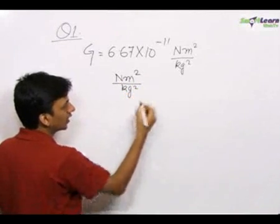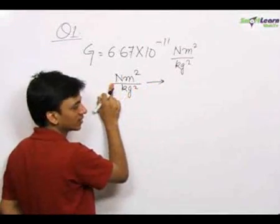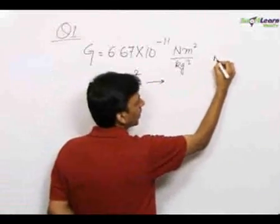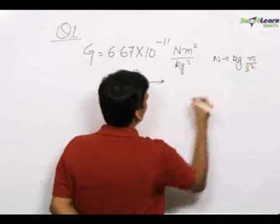Now when we convert this into CGS system, we first convert this Newton into CGS system. Newton stands for kg meters per second square.